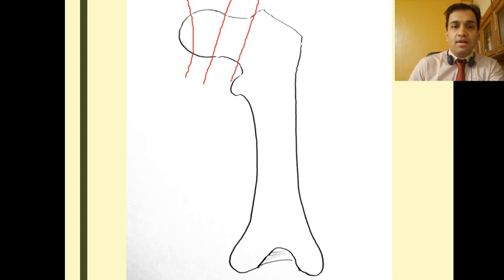Between the sub-capital and the basi-cervical, you have a fracture line right in the middle of the neck, therefore called the trans-cervical fracture neck femur.